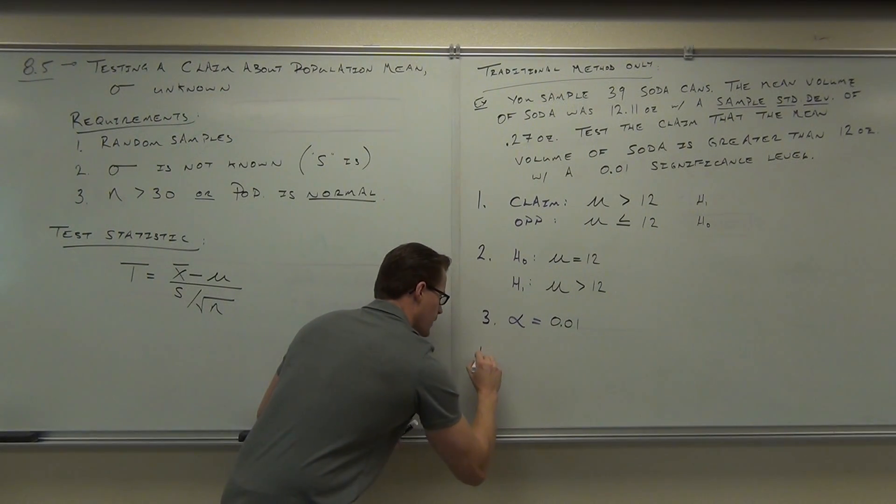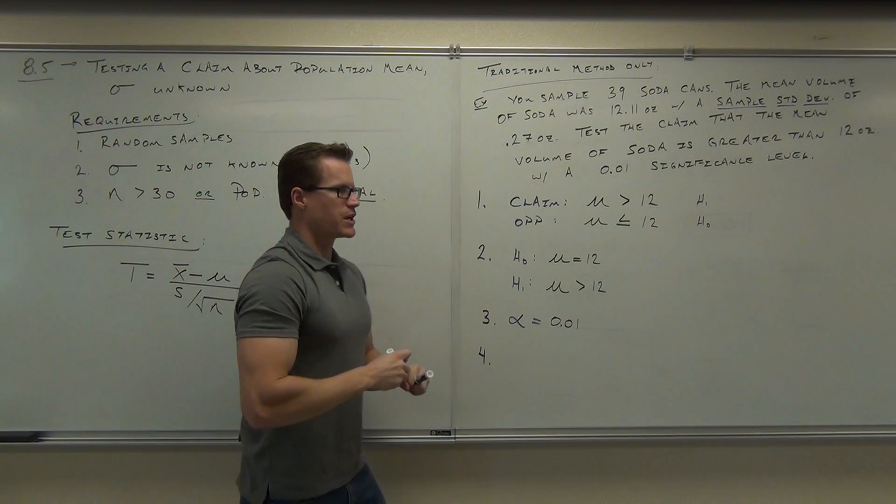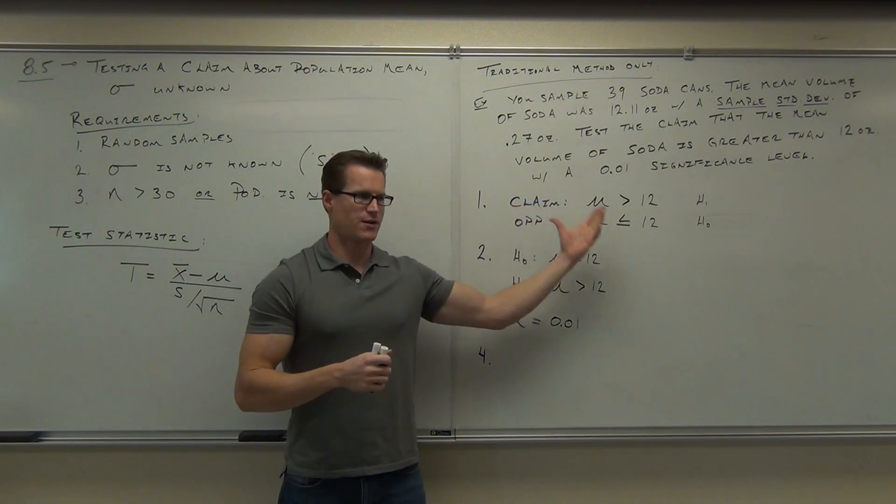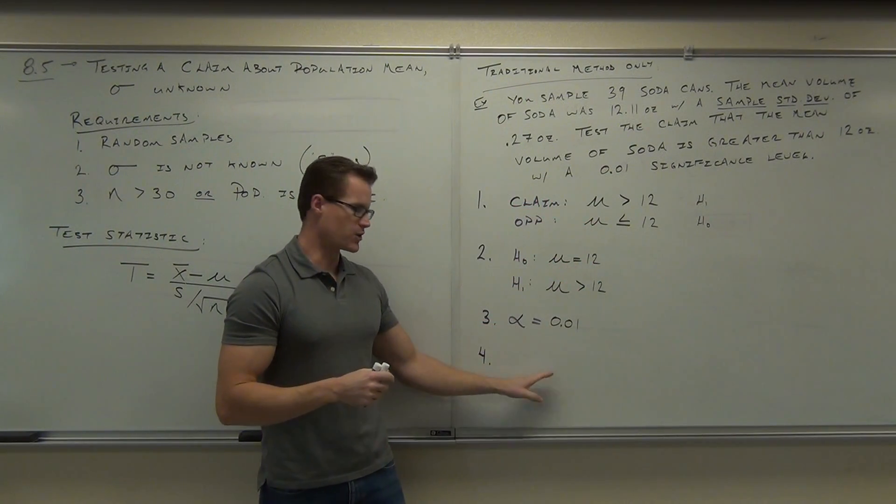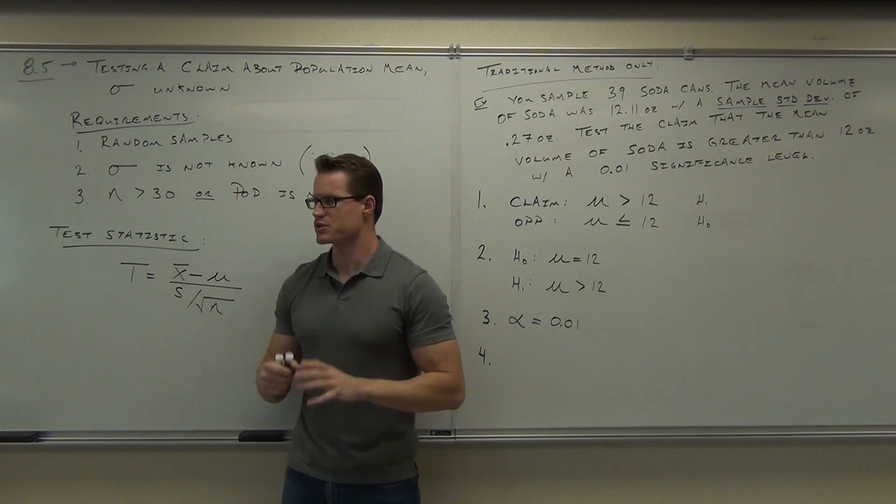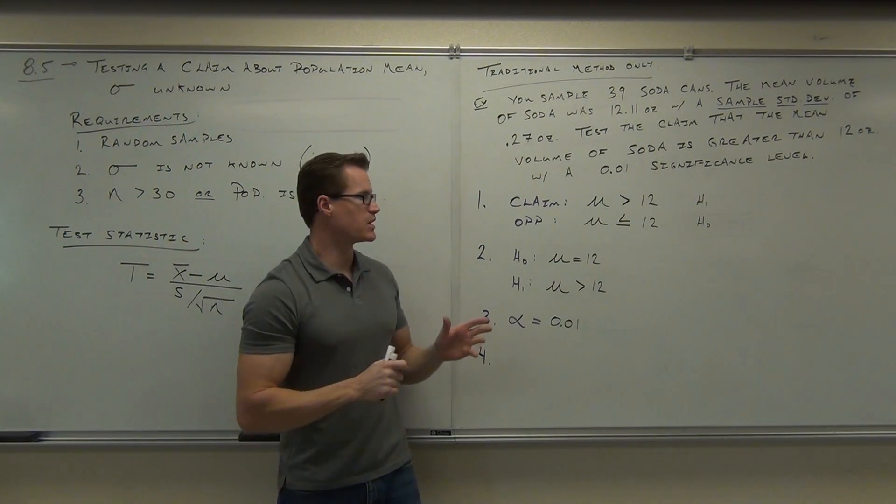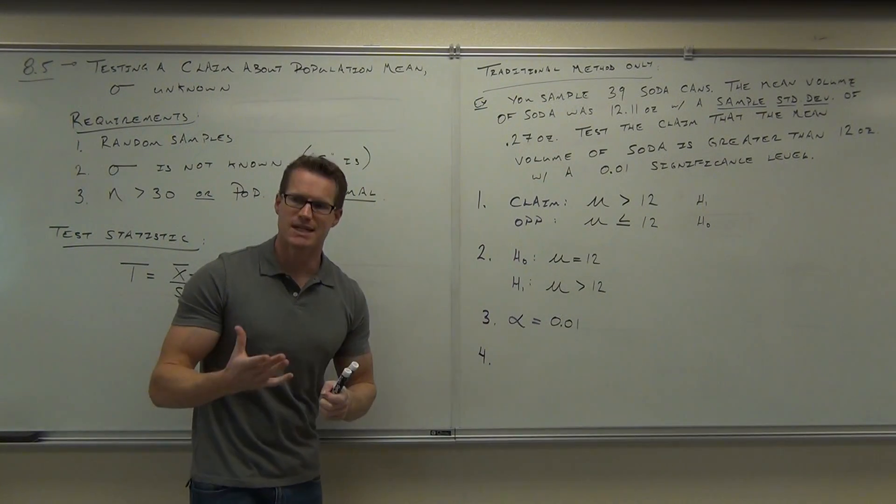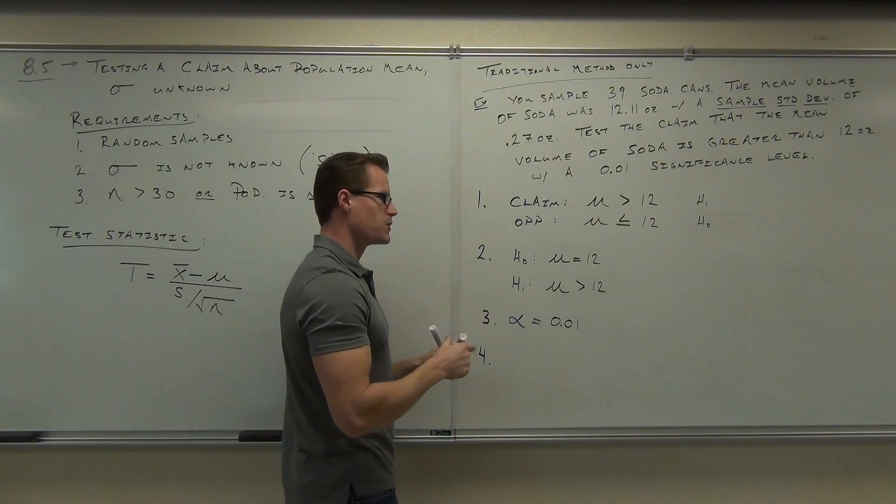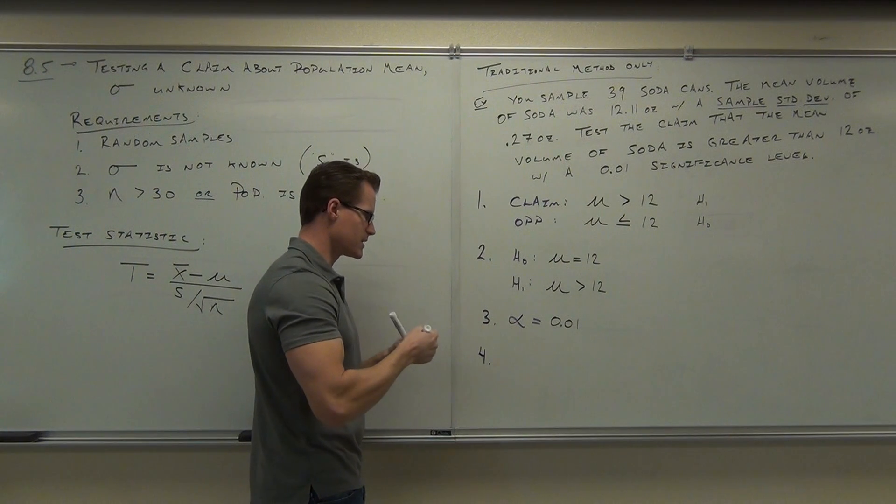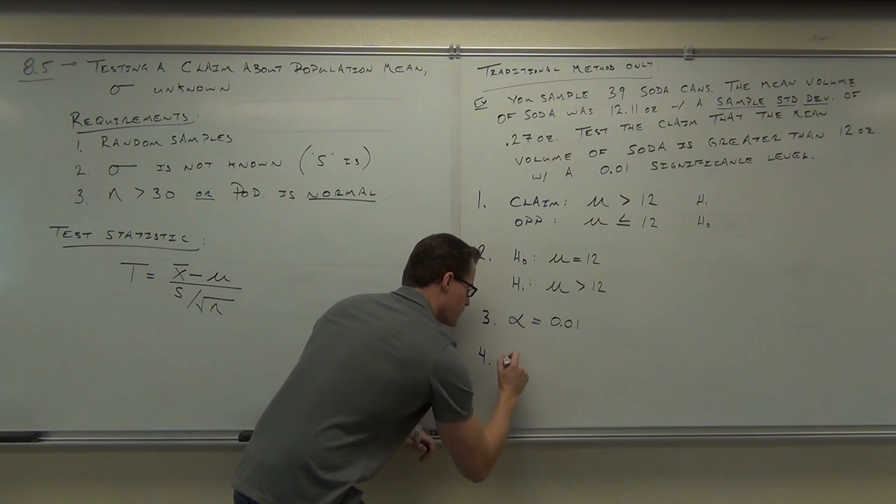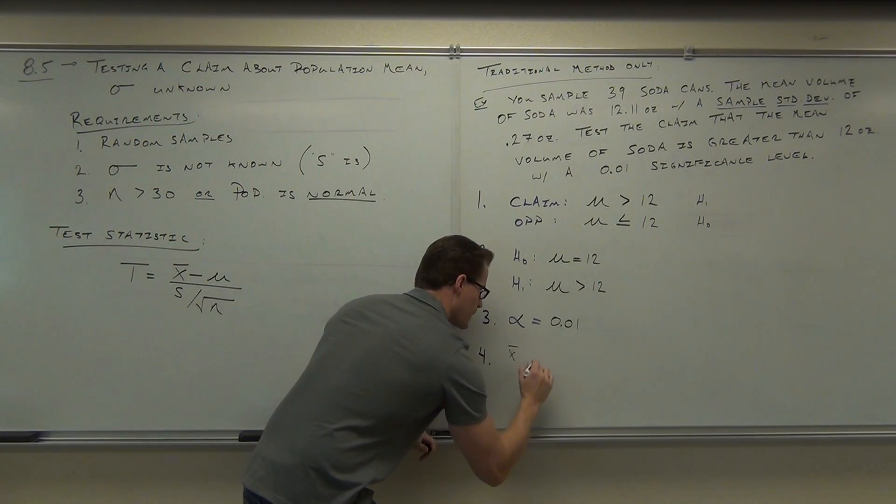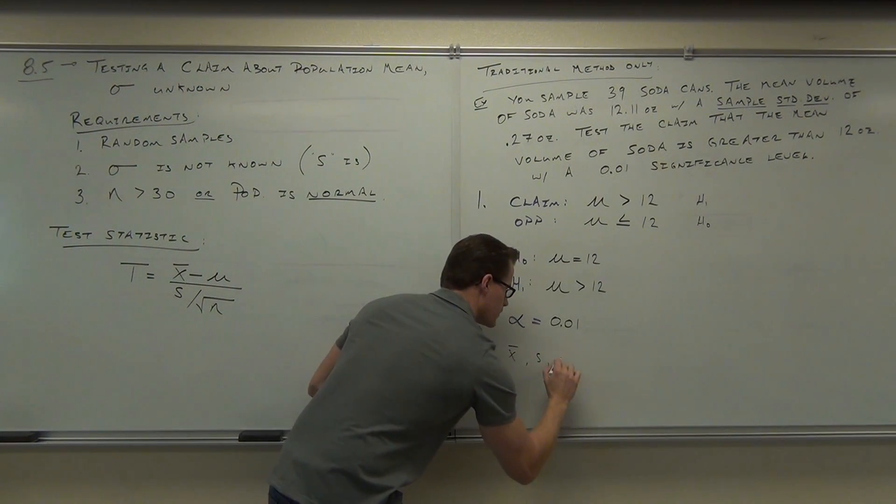And test number 4, notice how you do the same exact thing for every single type of problem we've had so far. Test number 4 is where you make your decision whether you're using a Z or a T. In our case, because we don't know our sigma, we know our S, we're going to be using a T test statistic here. So, the few things we need to know about a T test statistic, we need to know X bar, S, mu, and N.